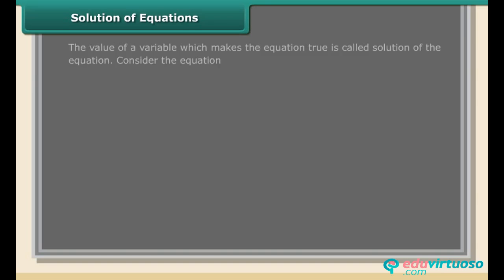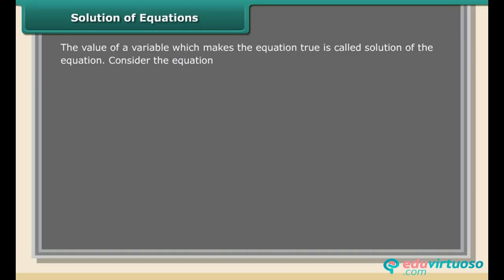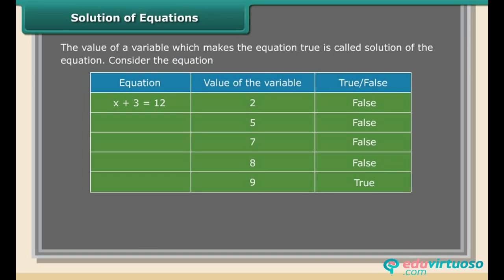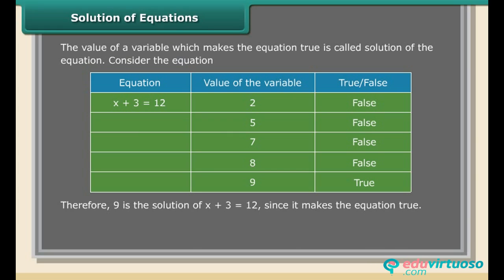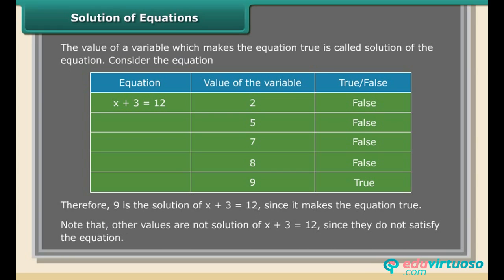The value of a variable which makes the equation true is called the solution of the equation. For example, 9 is the solution of x + 3 = 12, since it makes the equation true. Other values are not solutions of x + 3 = 12 since they do not satisfy the equation.